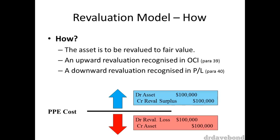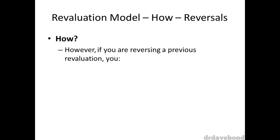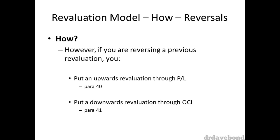This is another example of conservative accounting embedded in the standards. However, if you are reversing a previous revaluation, you put an upwards revaluation through profit and loss until you have cleared the previous downwards revaluation. The opposite holds true for a downwards revaluation reversing a previous upwards revaluation — in that case, the downwards revaluation goes through OCI.